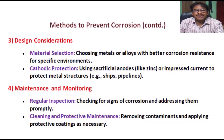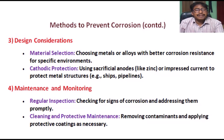3. Design considerations: Material selection involves choosing metals or alloys with better corrosion resistance for specific environments. Cathodic protection uses sacrificial anodes, like zinc, or impressed current to protect metal structures — for example, ships and pipelines.